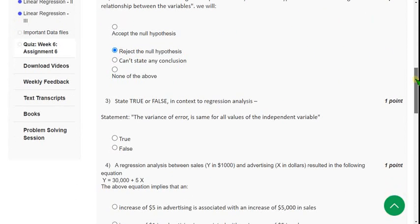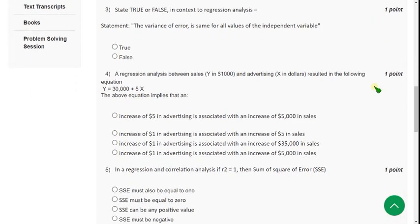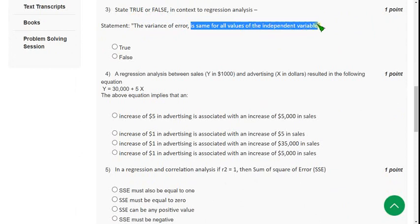Moving on to the third one. State true or false. So here the variance of error is same for all values of the independent variable. So it is correct only. That is true. It is already mentioned in the lectures right. So it is true.